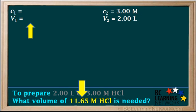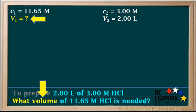The initial solution is the concentrated HCl, which has a concentration of 11.65 M. And our unknown, V1, is the initial volume of this solution. This is the volume of the concentrated HCl that she would need to start with.